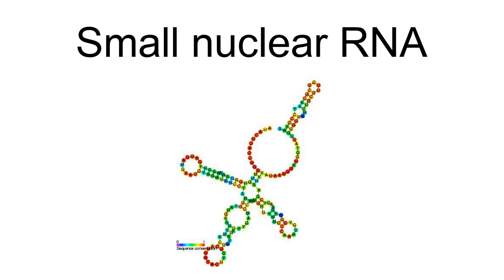snRNAs were discovered by accident during a gel electrophoresis experiment in 1966. An unexpected type of RNA was found in the gel and investigated. Later analysis has shown that these RNAs were high in uridine and were established in the nucleus.